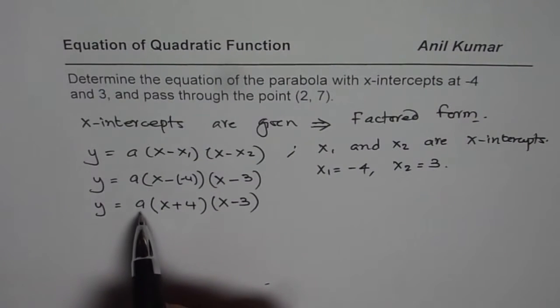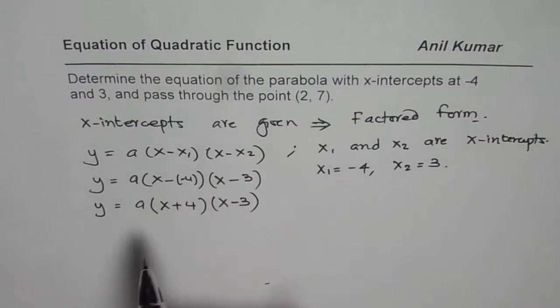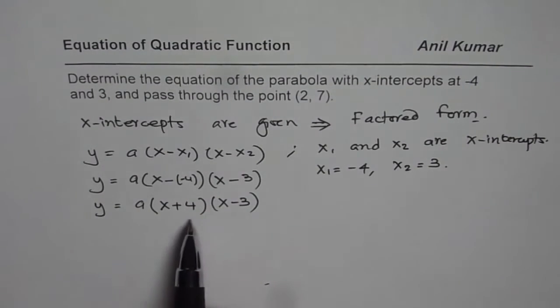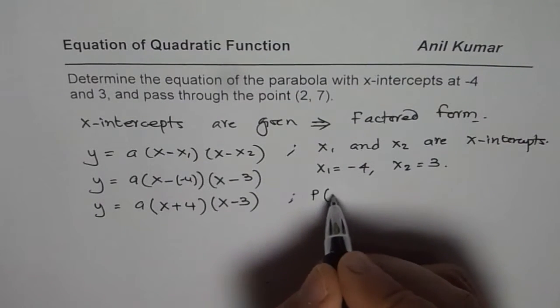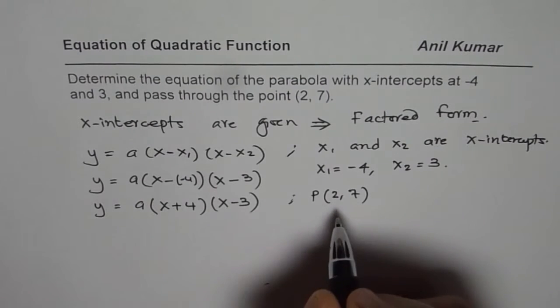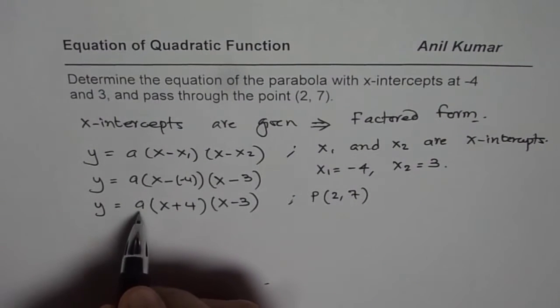Now, to find the value of A, we will use the point given to us. If we don't use it, it is the family of parabolas which is going through these x-intercepts. But we are talking about a specific one which goes through the point (2, 7). So, now we are given a point which is (2, 7), where x value is 2, y value is 7. That helps to find the value of A.